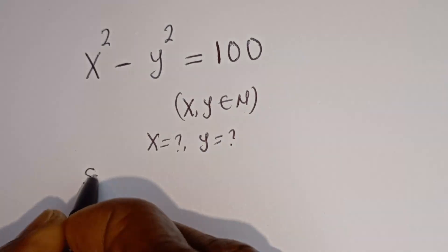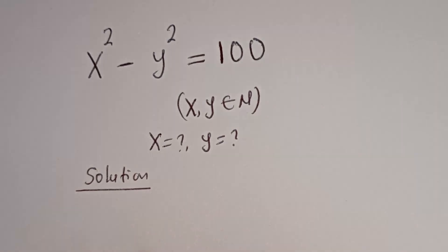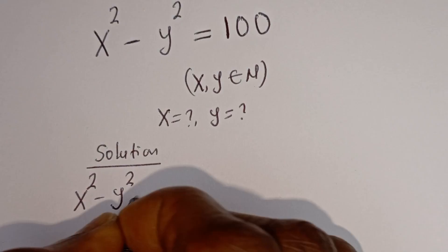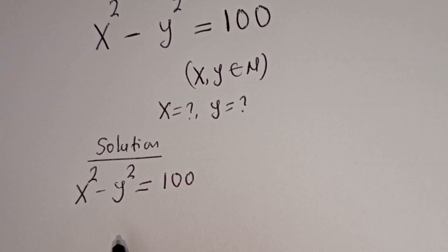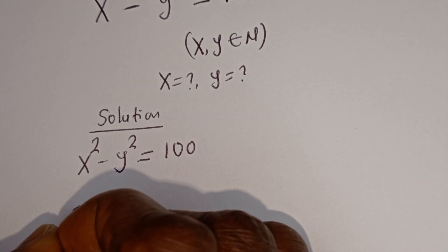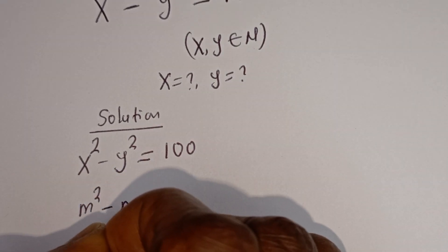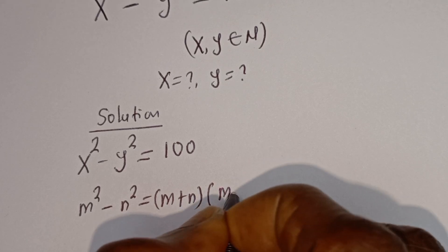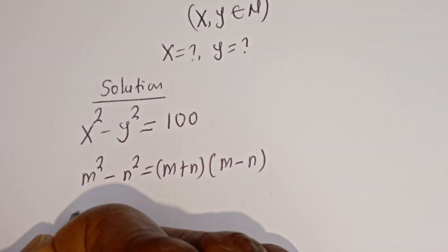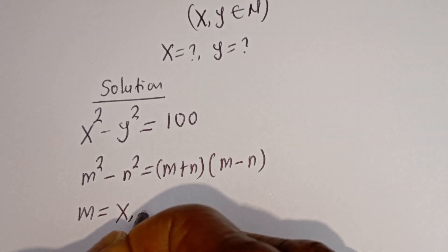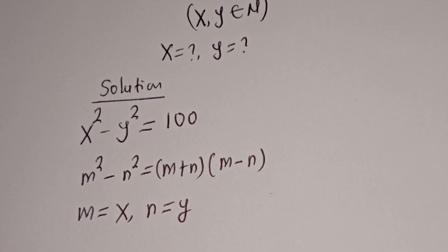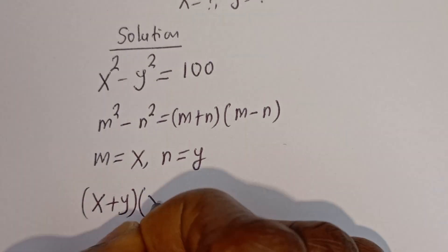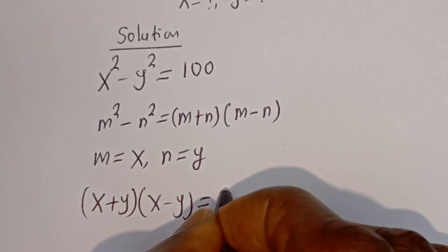Solution. Here we have X squared minus Y squared is equal to 100. This is in the form of a difference of squares. If you have M squared minus N squared, this is equal to (M plus N)(M minus N), where M equals X and N equals Y. Then we have (X plus Y)(X minus Y) is equal to 100.